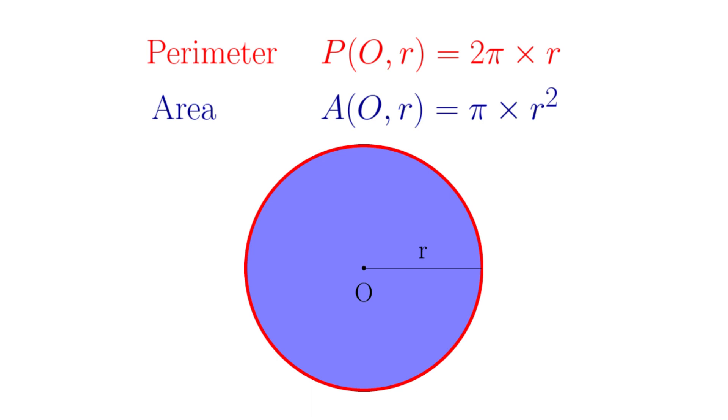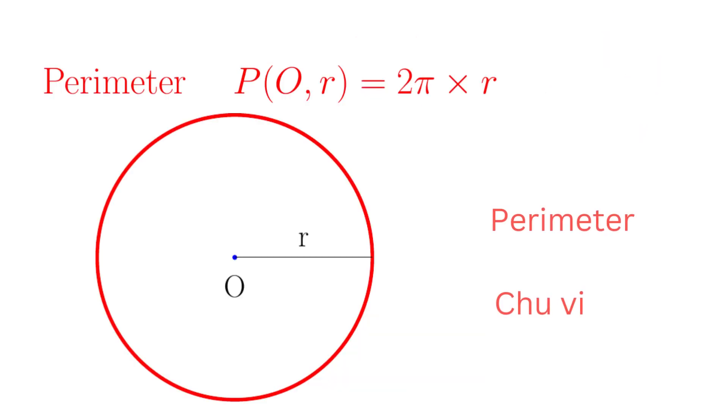Have you ever asked how these formulae are derived? Let's look again at the formulae one by one. Why does the perimeter of a circle with radius r equal the product of 2π and its radius?